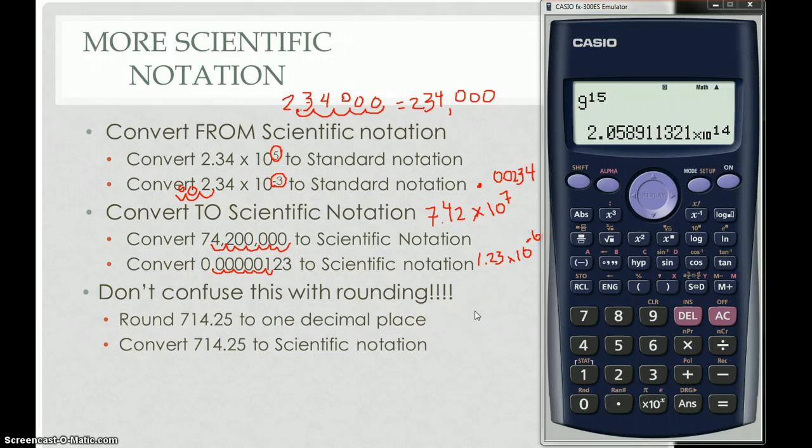Now, it's very important to not confuse scientific notation with rounding. If I ask you to round the number 714.25 to one decimal place, that means I want you to draw your line between the 2 and the 5 and figure out whether I round up or down. So 5 is between 5 and 9, so I round up. So if I round to one decimal place, that's 714.3. If I convert to scientific notation, I move the decimal place two places. That's 7.1425 times 10 to the 2nd.